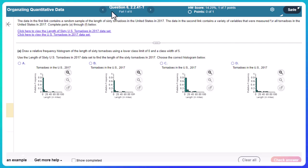The data in the first link contains a random sample of the length of 60 tornadoes in the US in 2017. The data in the second link contains a variety of variables that were measured for all tornadoes in the US in 2017, complete parts A through F below.